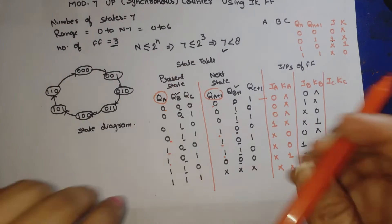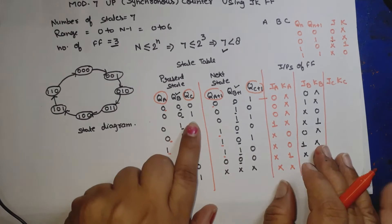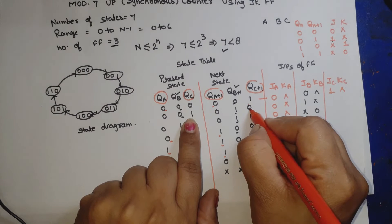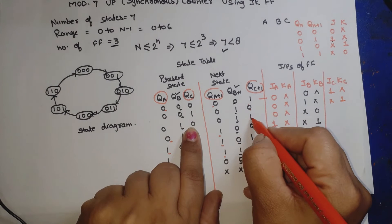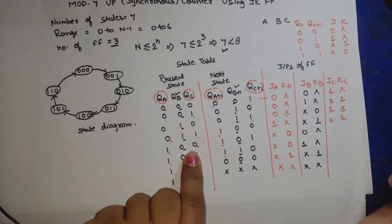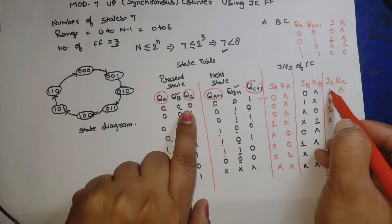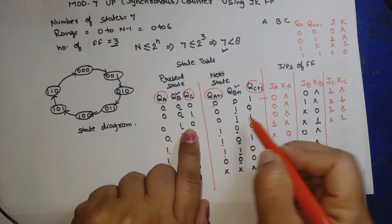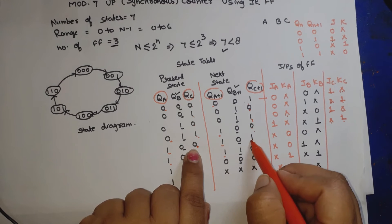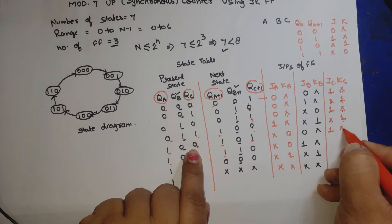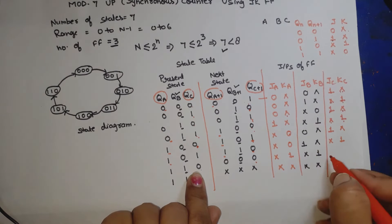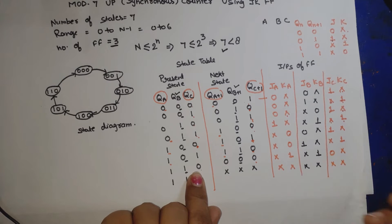For JC and KC, we compare QC and QC+1 for each row. Applying the excitation table: 0→1 gives 1,X; 1→0 gives X,1; and 0→0 gives 0,X. We fill in all the JC and KC values, with the last row (unused state 111) giving X,X as don't care.